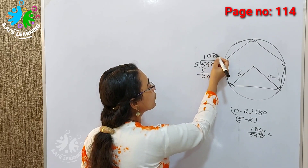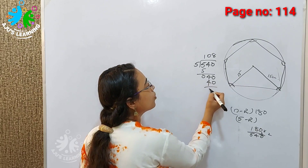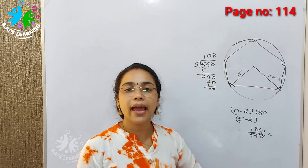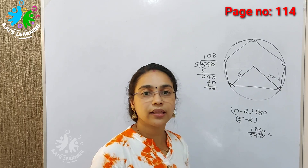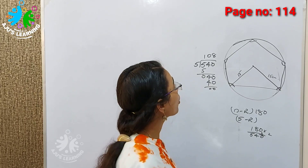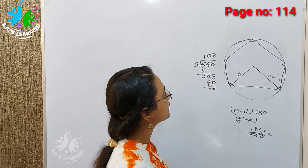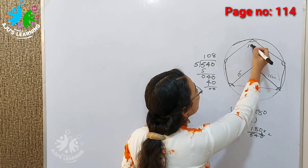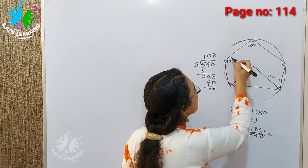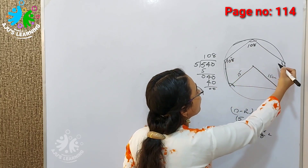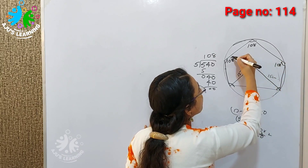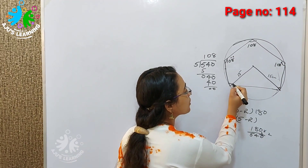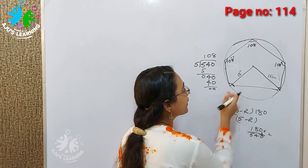Each interior angle of a regular pentagon is 108 degrees.